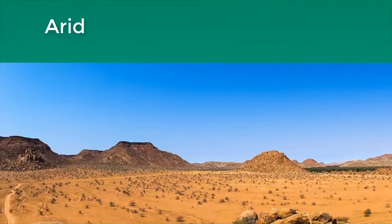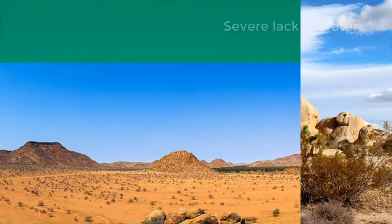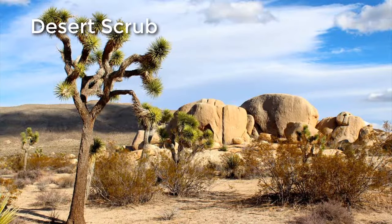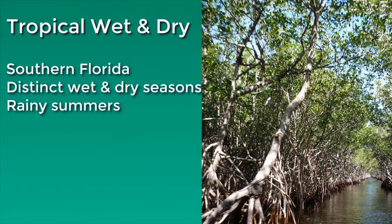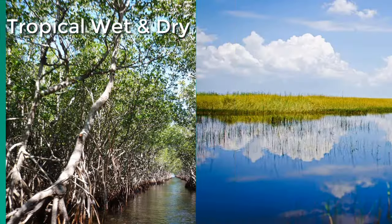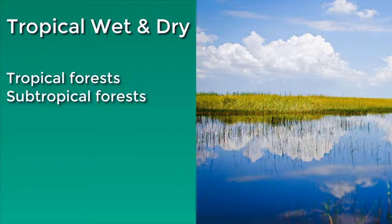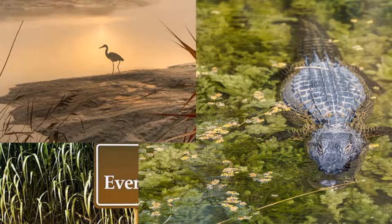The arid climate region is characterized by a severe lack of water. America's deserts, notably the Mojave, are located mostly within this zone. The predominant ecosystem here is the desert scrub, where you'll see plants like the Joshua tree and the creosote bush eking out a living under harsh conditions. The humid subtropical climate region, noted for relatively high temperatures and evenly distributed rainfall throughout the year, makes up the majority of the southeastern United States. The southern tip of Florida falls within the tropical wet and dry climate region, marked by distinct wet and dry seasons with most of the rain coming during the high-sun summer months. Its dominant ecosystems are tropical forest and subtropical forest that include huge swaths of wetlands, most notably the Everglades — home to the alligator, egret, and Florida panther.